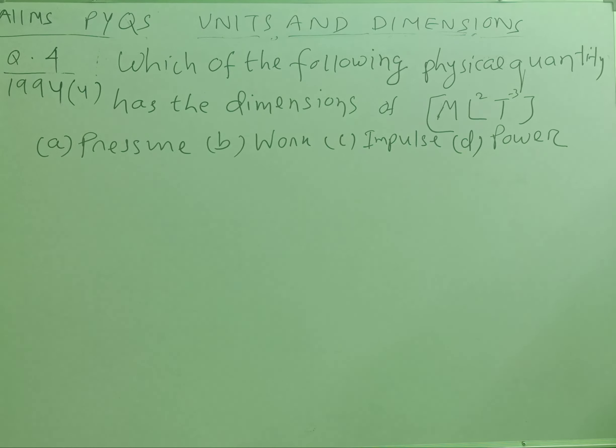This is the fourth question asked in the year 1994 from the chapter units and dimensions. The question was which of the following physical quantity has the dimensions of ML² T⁻³. There are four options: